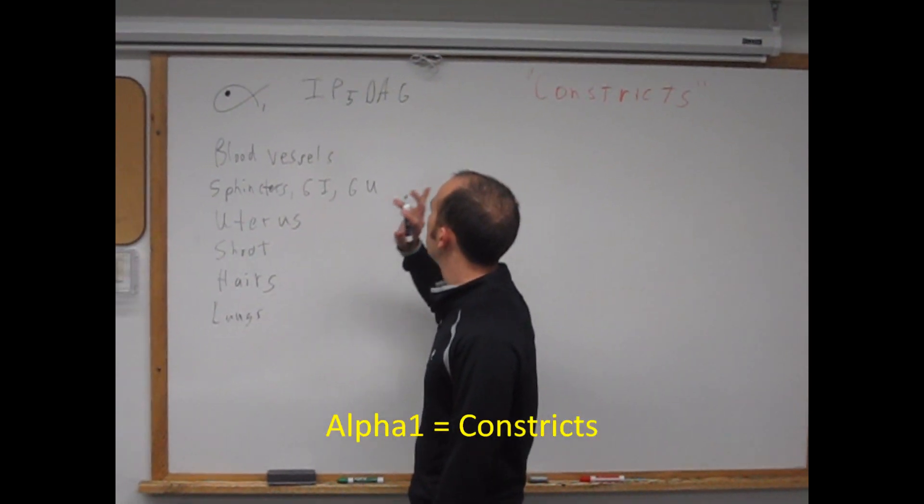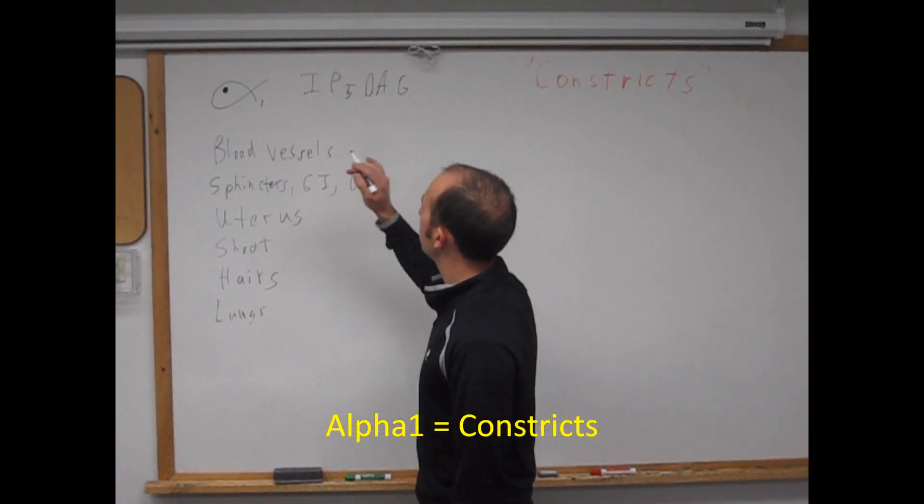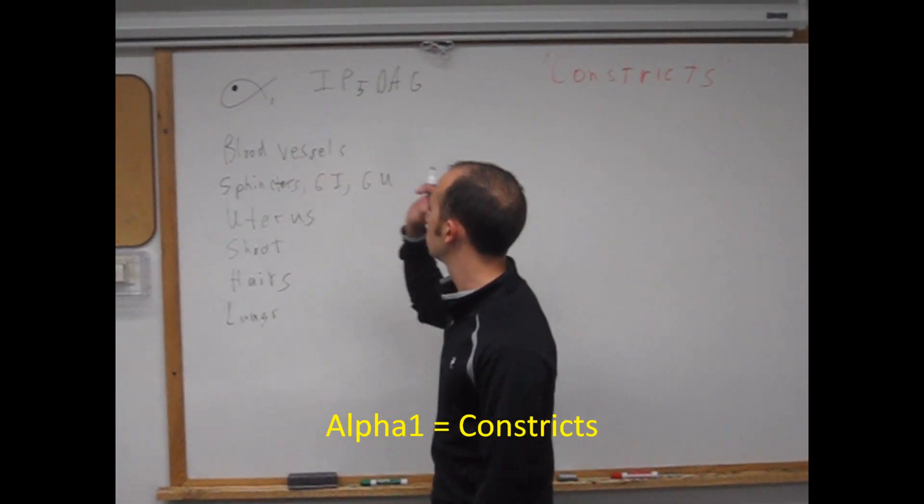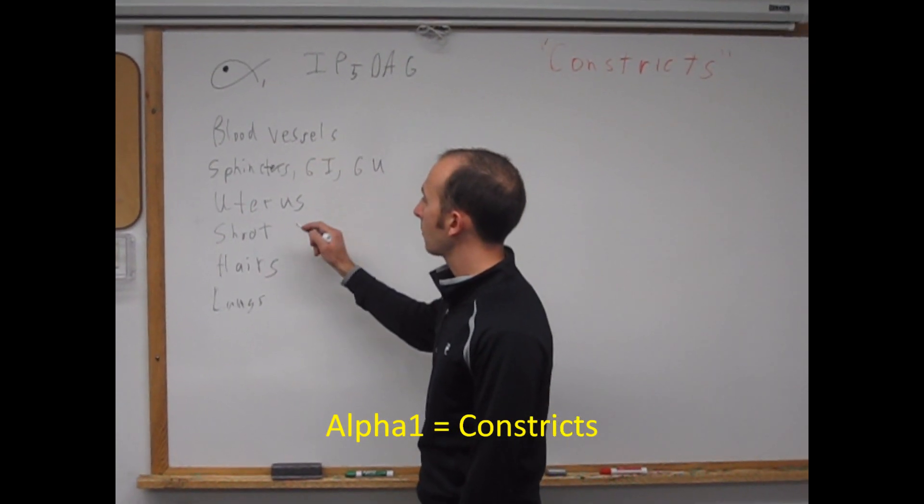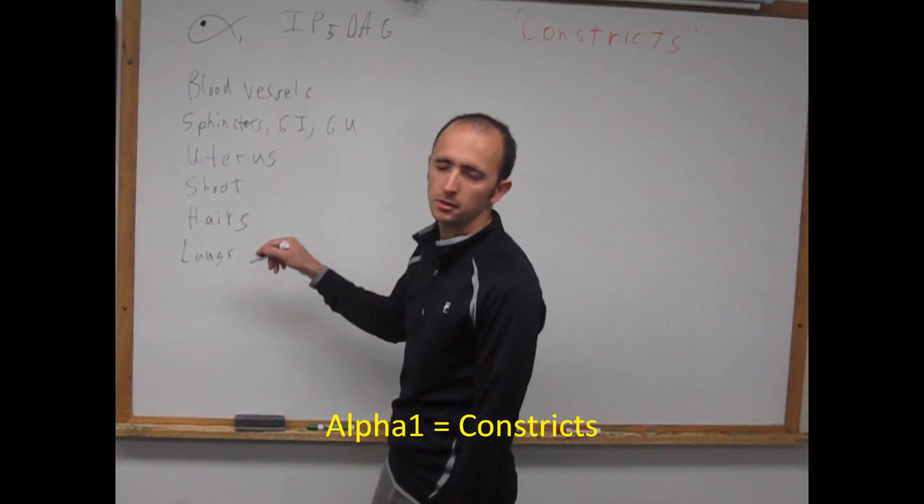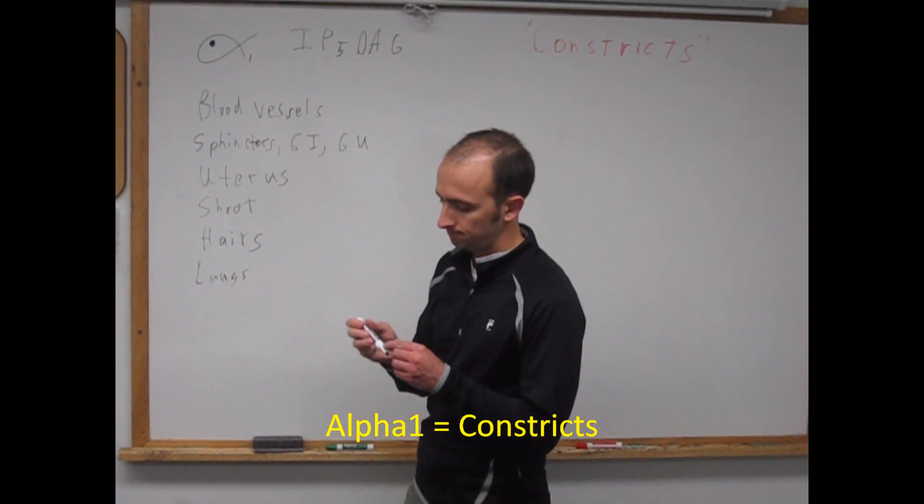So alpha-1 overall, IP3 DAG, constricts blood vessels, sphincters, uterus, male reproductive, and more. Thank you.